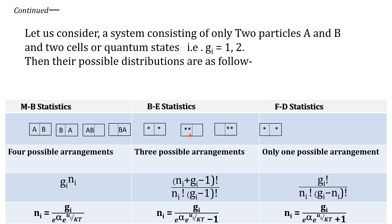In Bose-Einstein statistic, the particles are identical and indistinguishable, so there is no question of labeling. The distribution in two cells is: one particle in the first cell and one particle in the second cell; or both particles in the first cell with the second empty; or the first cell empty and both particles in the second cell. In that way there are three possible arrangements under Bose-Einstein statistic. In Fermi-Dirac statistic, which obeys the Pauli exclusion principle, there can be only one particle in each quantum state. Therefore in Fermi-Dirac statistic there is only one possible arrangement.